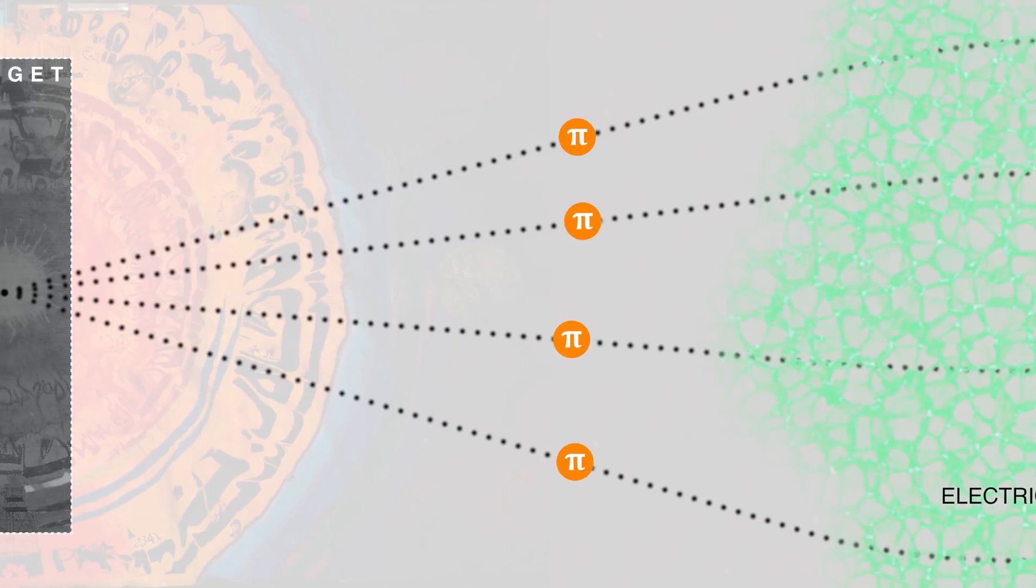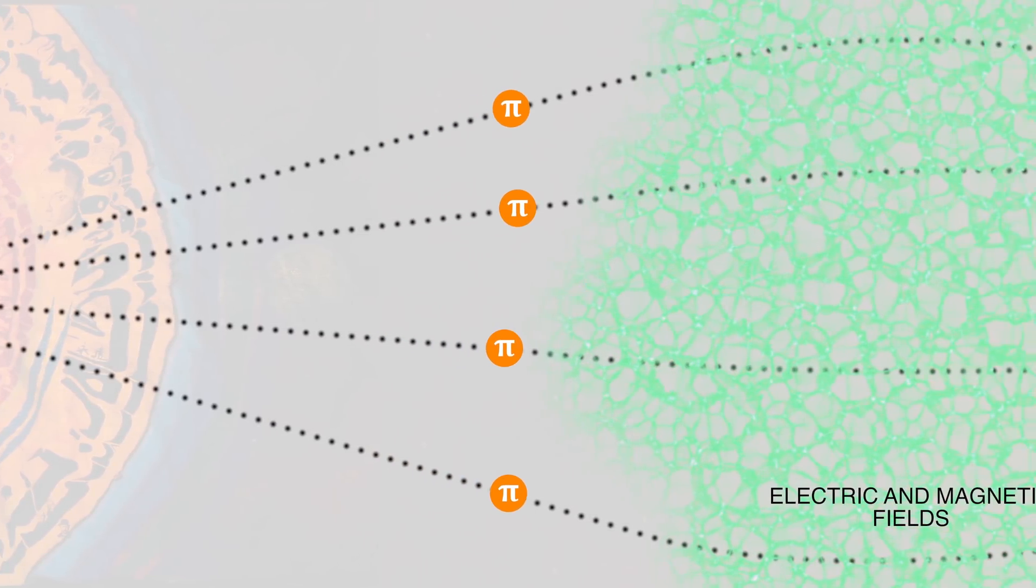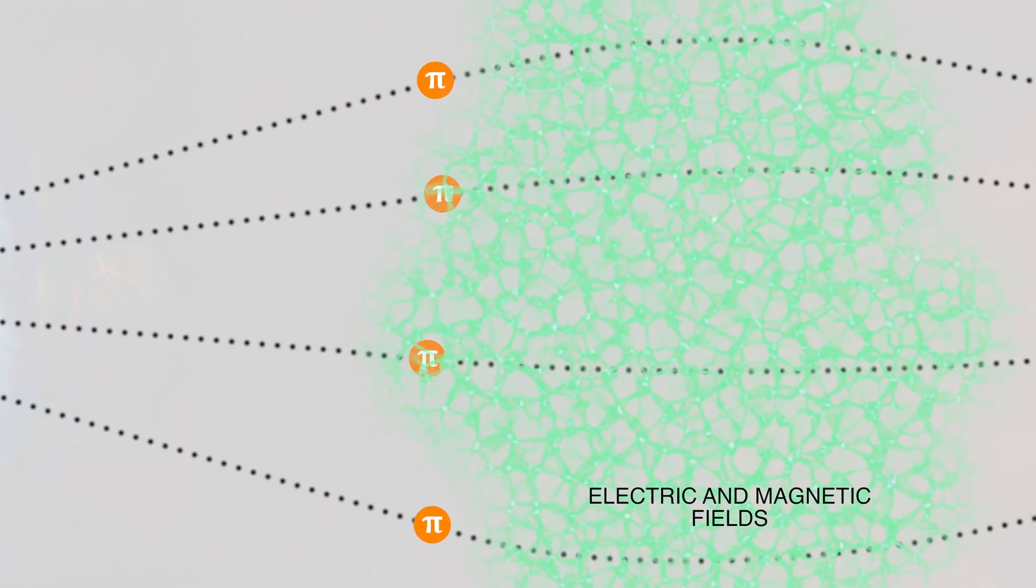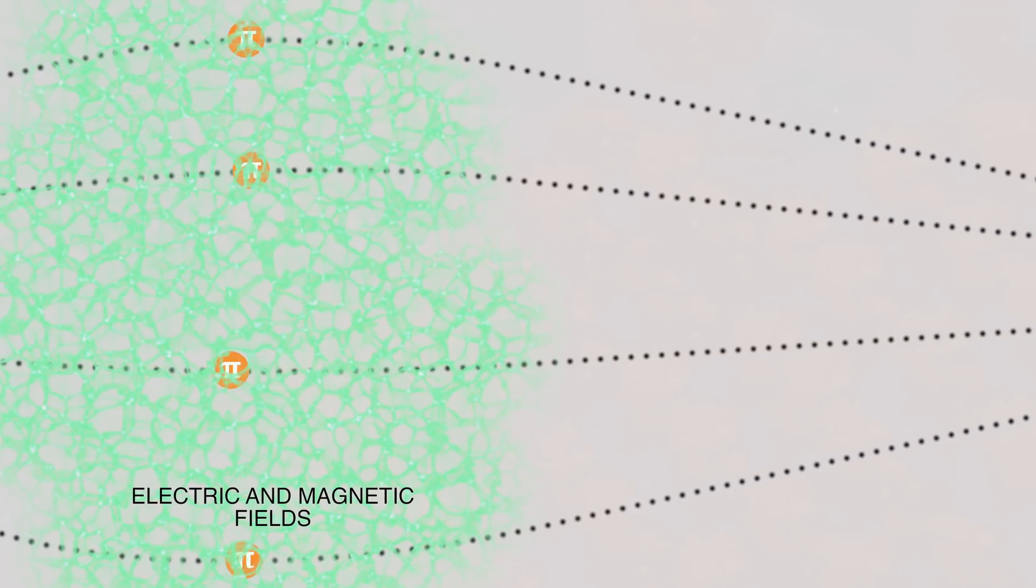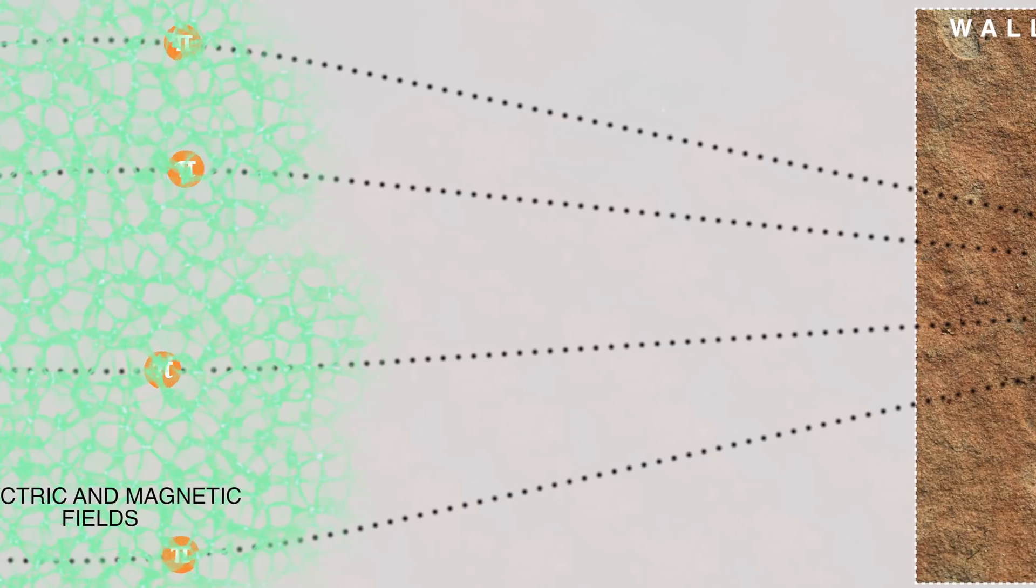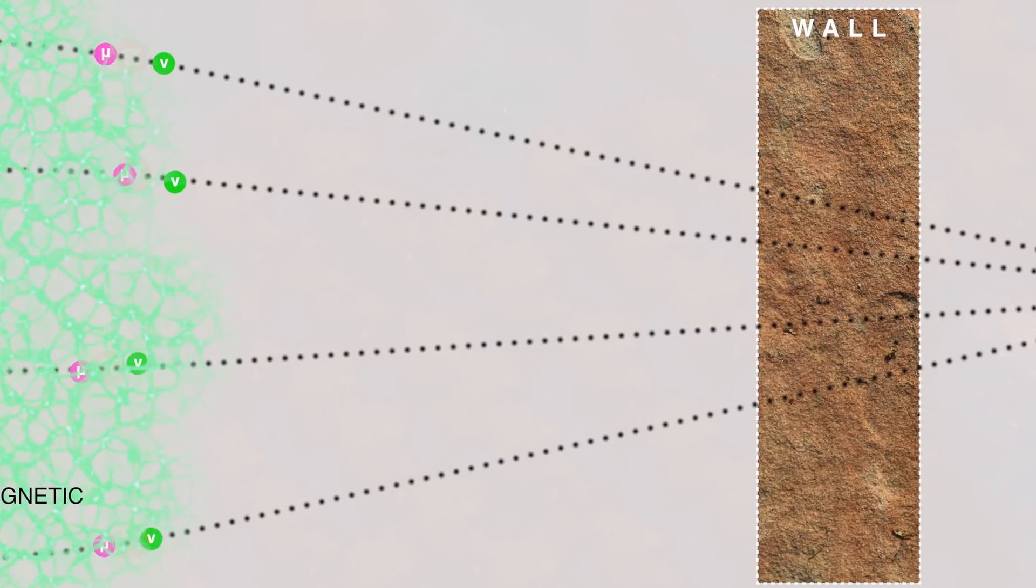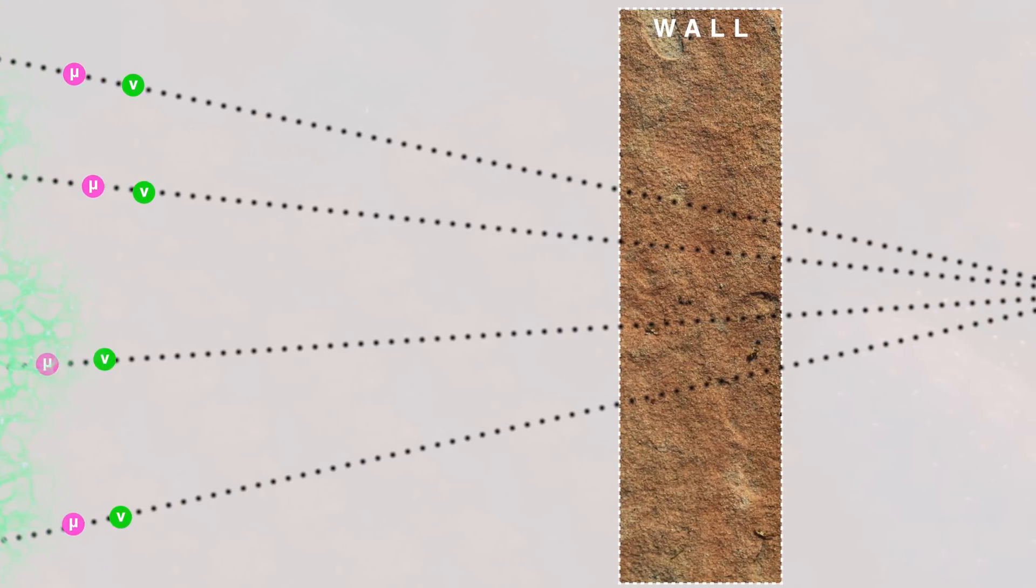A pion carrying electrical charge can be directed and manipulated by electric and magnetic fields. Thus, you can take pions coming out of the target and aim their direction of motion towards a distant target. And then you wait. Eventually the pion decays into a muon and a neutrino.